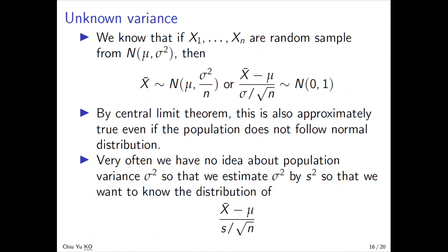It's easy to see that if n observations are a random sample from a normal distribution with mean μ and variance σ², then the sample mean X̄ will follow a normal distribution with mean μ and variance σ²/n. The normalized version follows a standard normal N(0,1).